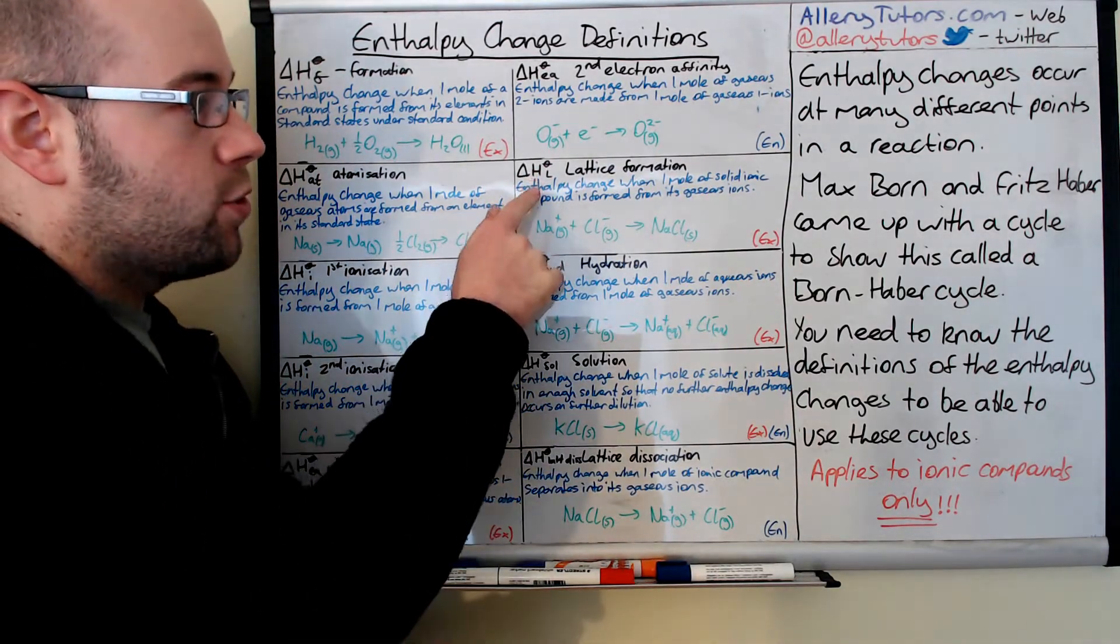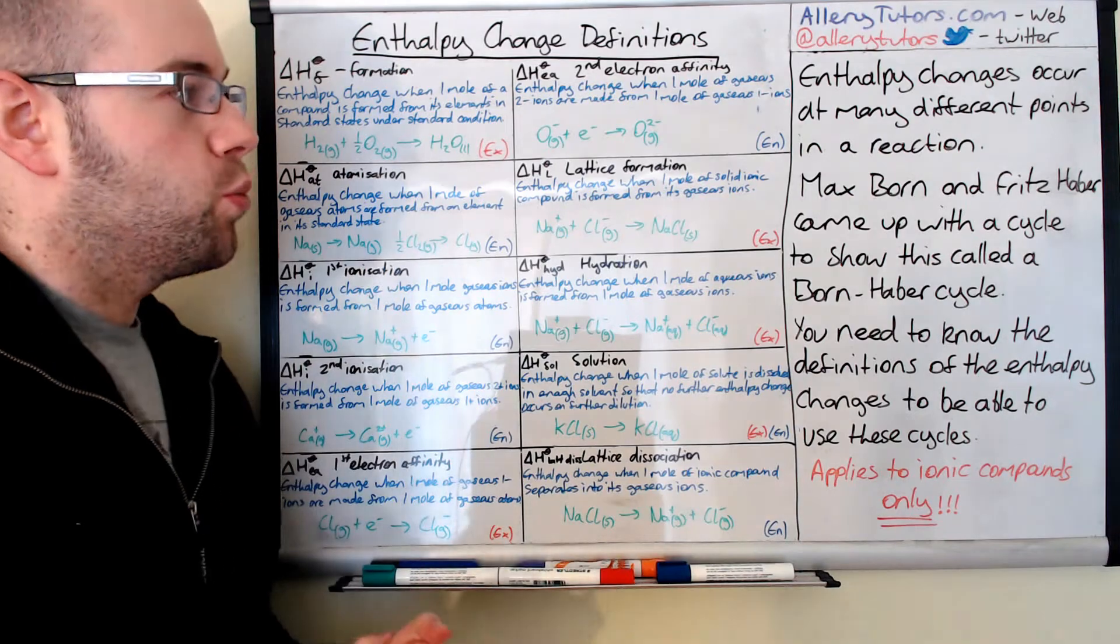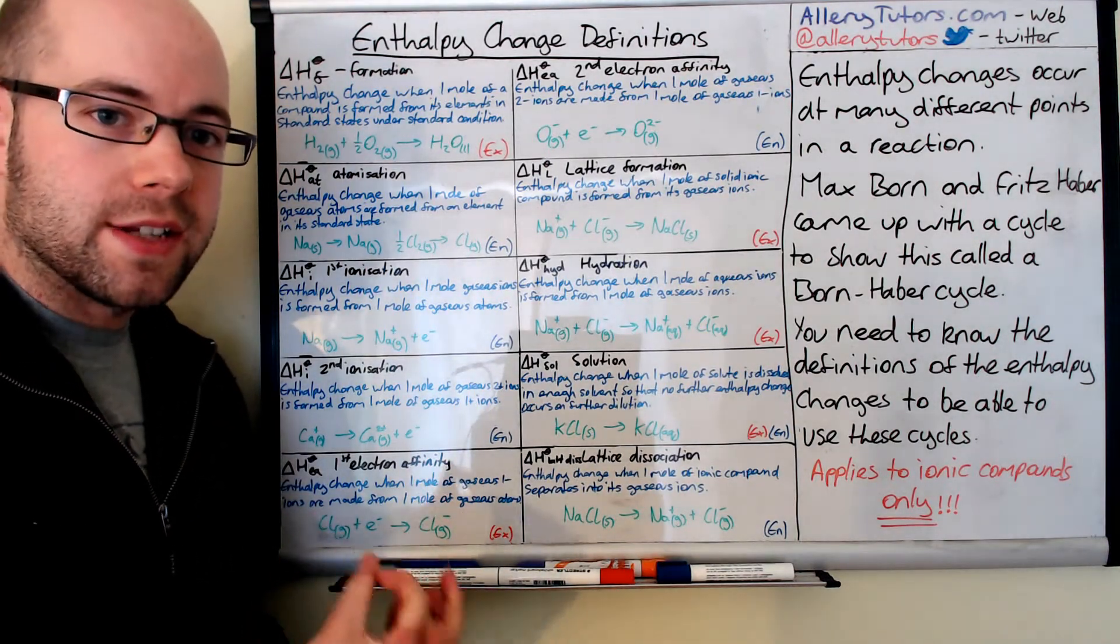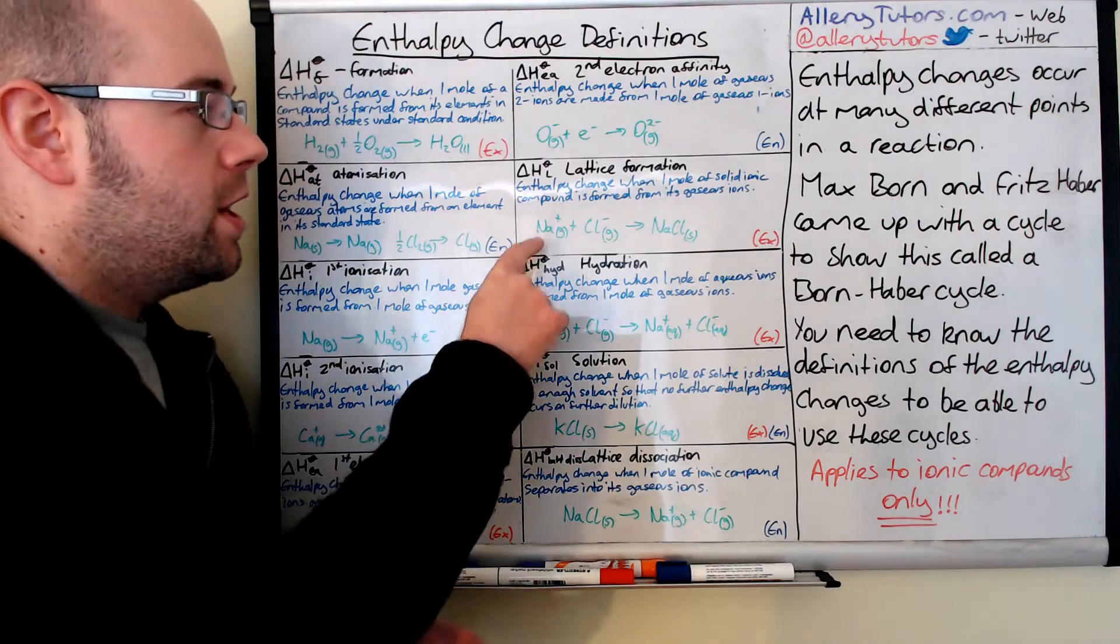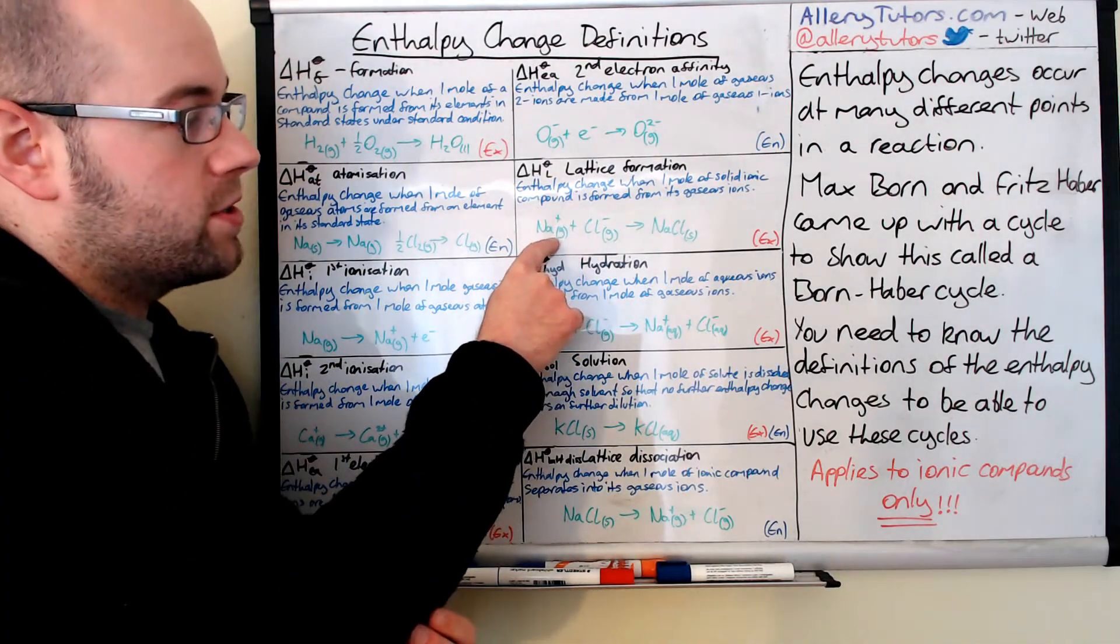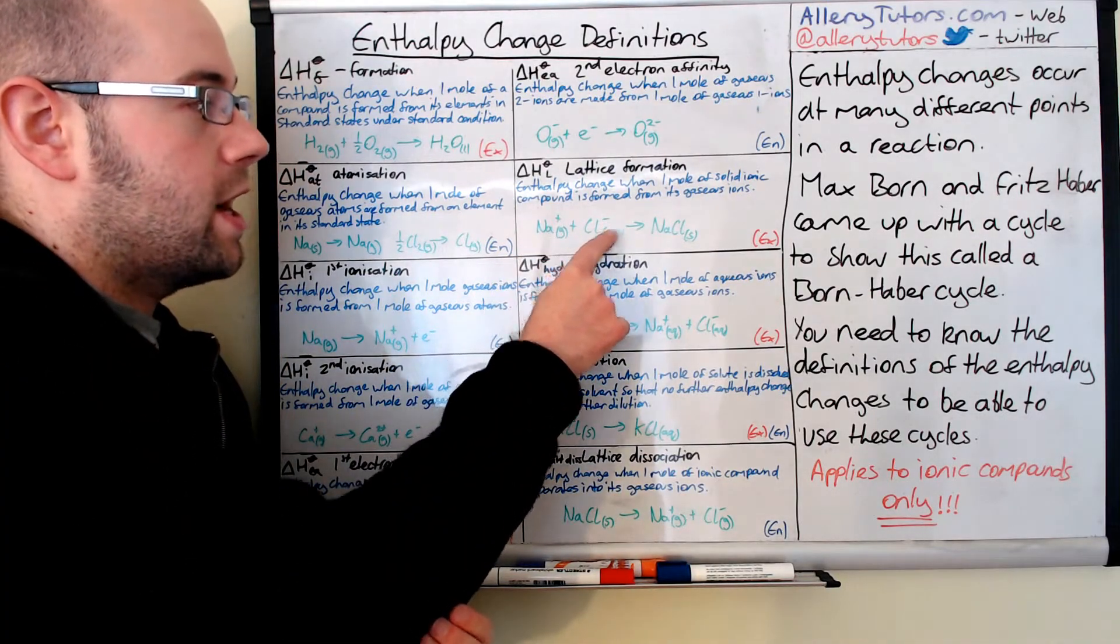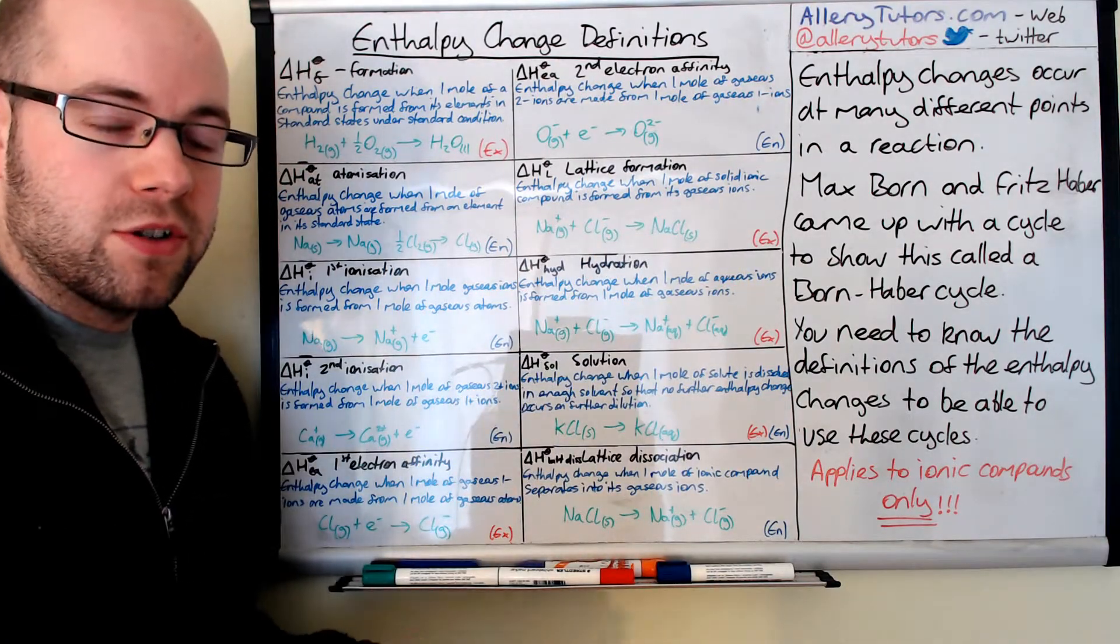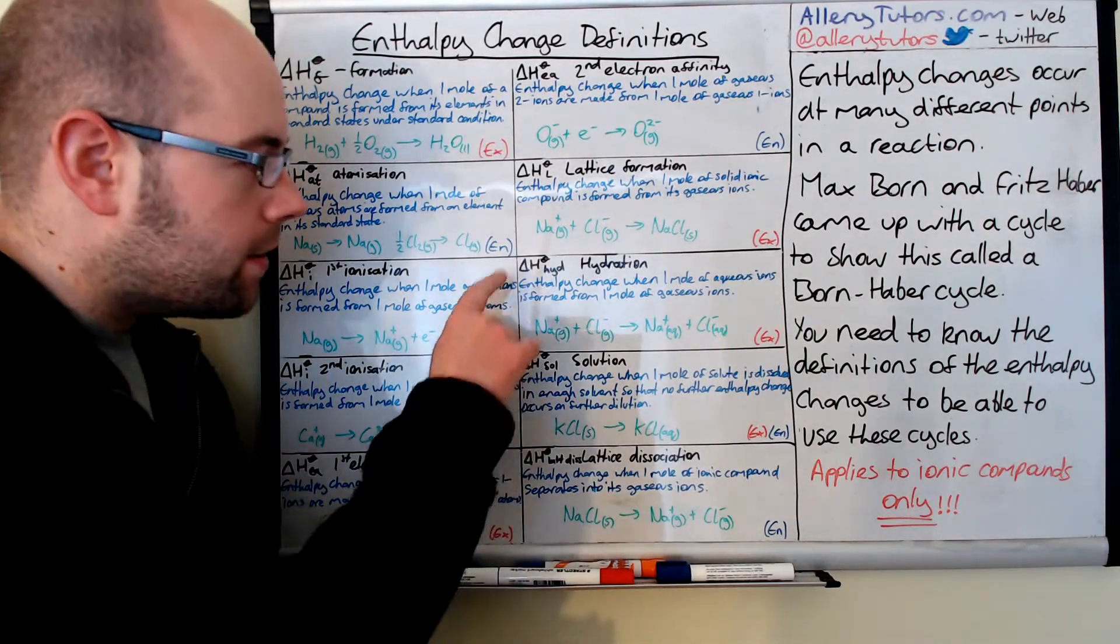Next is lattice formation. This is the enthalpy change when one mole of solid ionic compound is formed from its gaseous ions. State symbols are so important in these. You've got sodium gas, chlorine gas in the ionic form, forming sodium chloride solid. This is an exothermic reaction because we're bond forming.